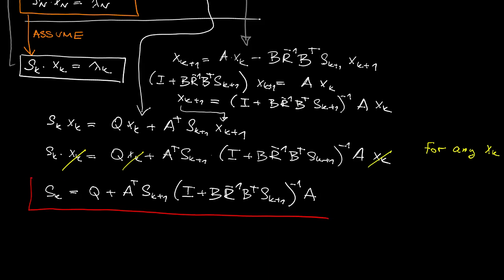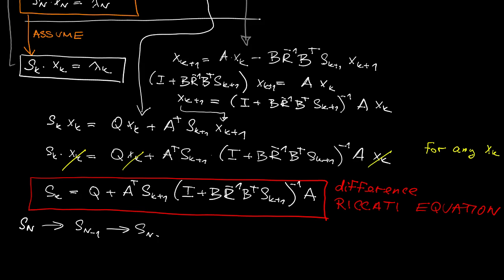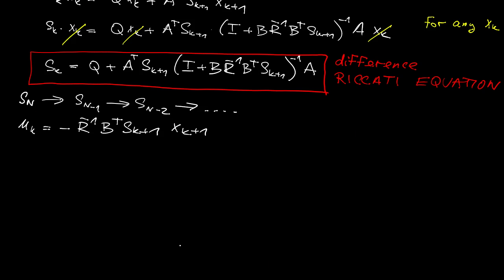Now this is a very famous equation, it's called difference Riccati equation. Note that we could have derived or reformatted it into a few more terms and you will find it in the lecture notes. Now this is the recurrence scheme which is initialized at the end of the control horizon so we initialize it with the value SN and compute S at lower values and once we have it we can compute the control signal.